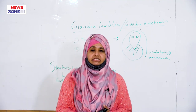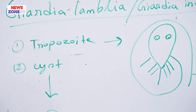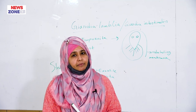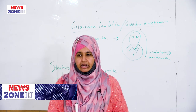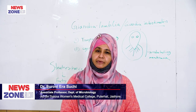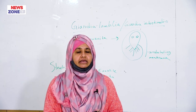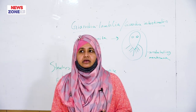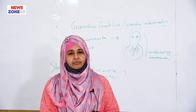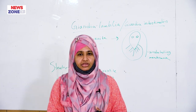For diagnosis of giardiasis, the sample is stool, and preparations include normal saline preparation and iodine preparation. In normal saline preparation under the microscope, we see trophozoites and cysts. In iodine preparation under the microscope, we see the inner structure of trophozoites and cysts. This is all about Giardia lamblia or Giardia intestinalis. Thank you.